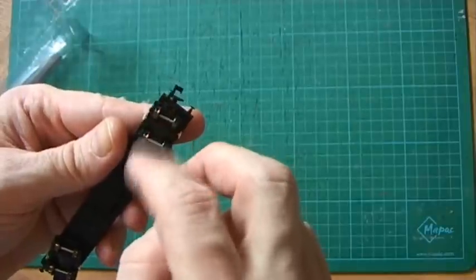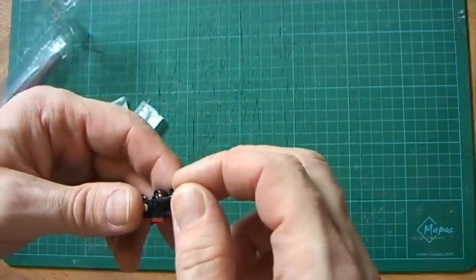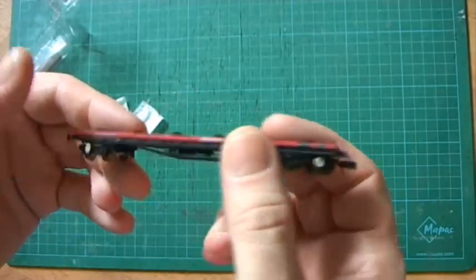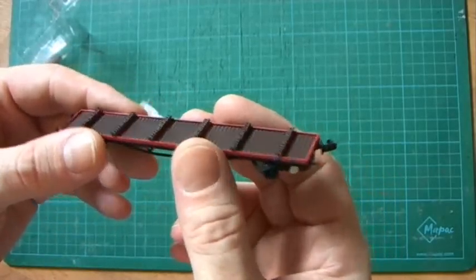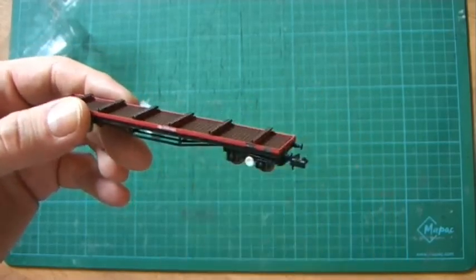Metal wheels. Let's have a quick check. NEM pockets, yes. NEM coupler pockets, fitted with Rapidos but also obviously interchangeable with any other coupling of your choice that will fit an NEM pocket.